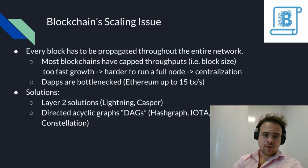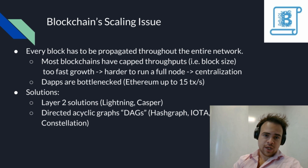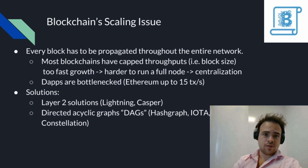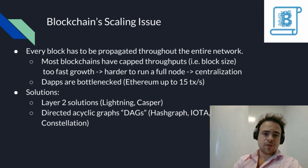Constellation looks at solving blockchain scalability issues. In a blockchain, every block has to be propagated through the entire network, so most blockchains have a throughput requirement — a capped block size — to keep the network from growing too fast. If a blockchain grows too fast in size, it gets harder for the average user to run a full node, which leads to fewer full nodes and centralization. dApps are severely bottlenecked by this; for example, Ethereum can only handle up to 15 transactions per second.